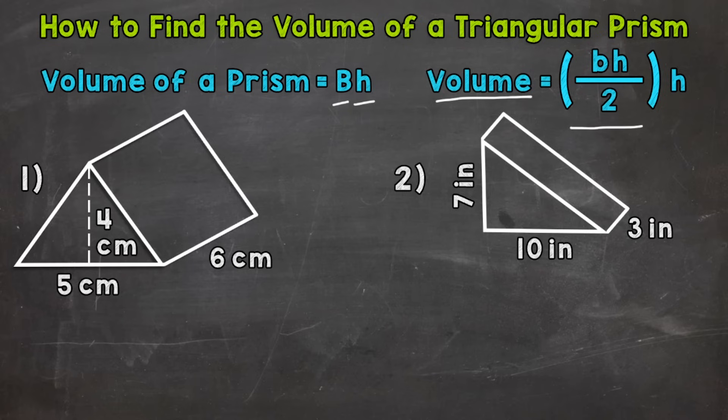Base times height divided by 2, and then we multiply that by the height of the prism.